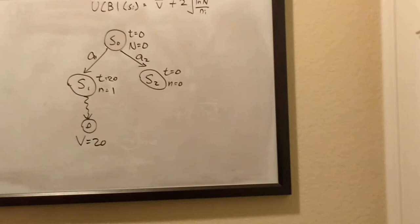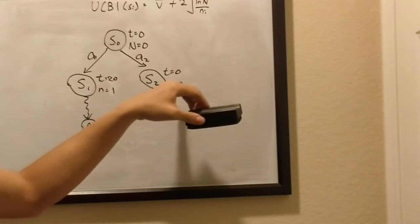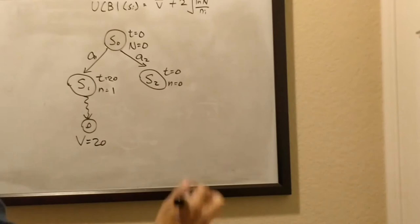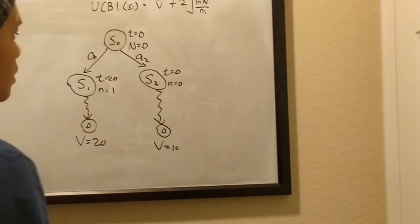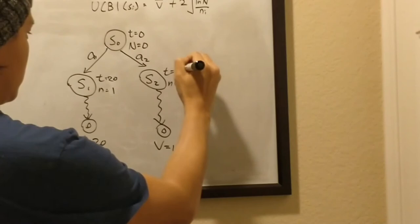So now, this value here is no longer infinity, and this one is still infinity, so we're going to jump over to S2, and then we're going to do a rollout there. Because, again, we never visited S2 before, so we'll do another rollout to the terminal node, and here, the value equals 10. So, we're going to update this to 10, and this will be 1.